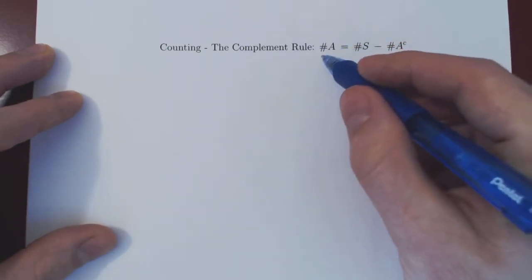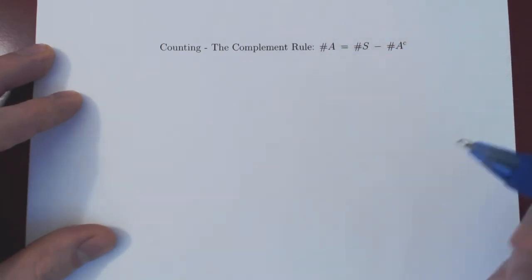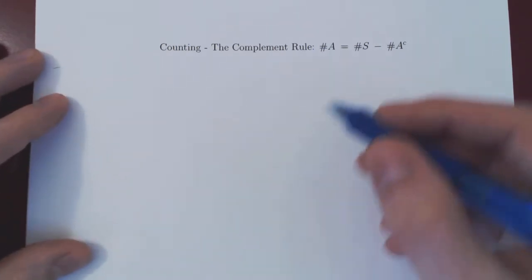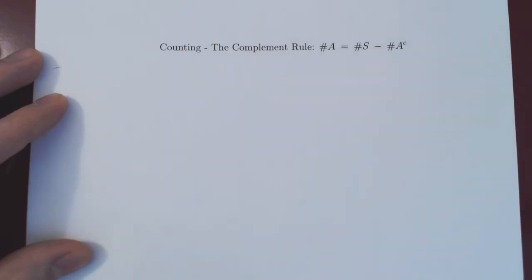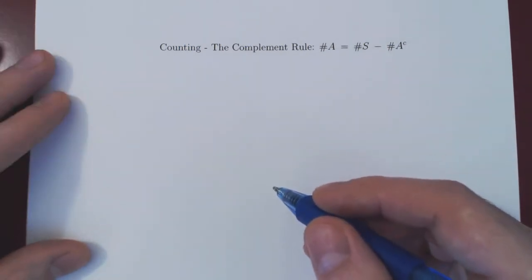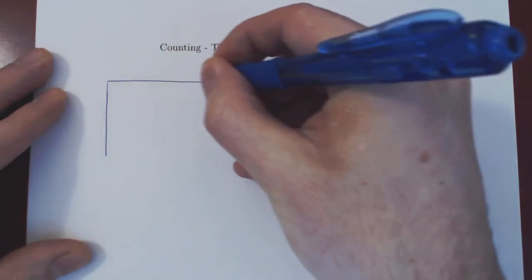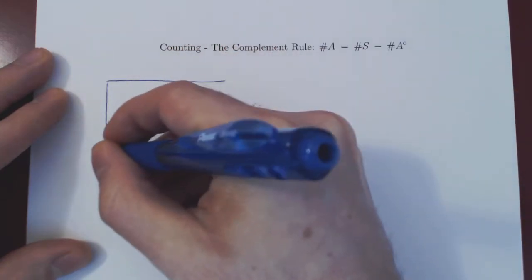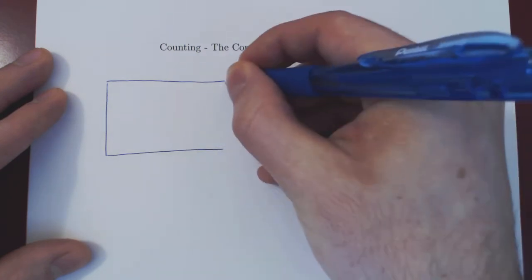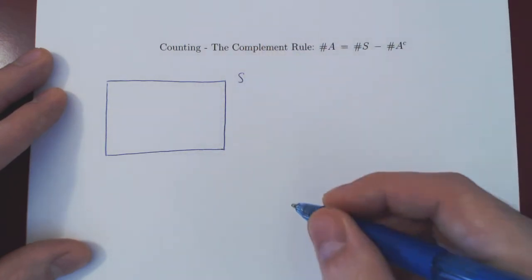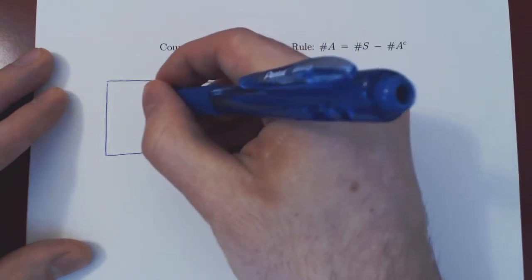We can easily explain this with the help of a Venn diagram. So let's do so, and then we'll consider an example to appreciate how this can be applied. We have our sample space S, the collection of all possible outcomes of a counting problem, and we're trying to count the event A.